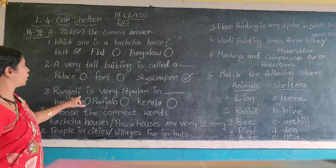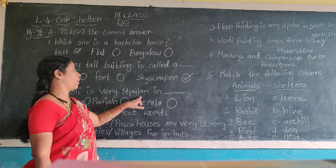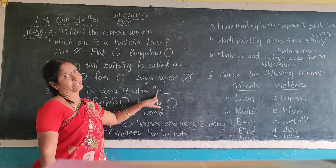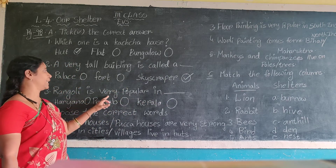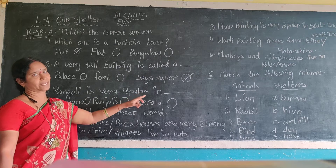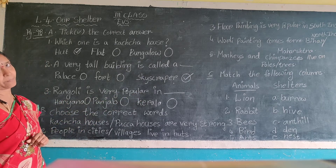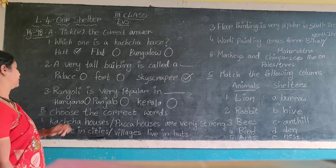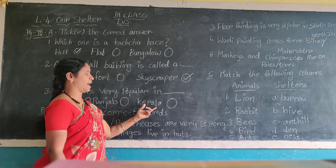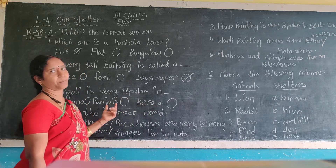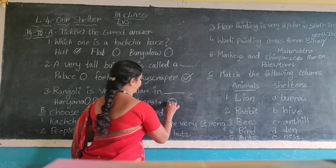Third one: Rangoli is very popular in dash. The options are Punjab and Kerala. The correct answer is Kerala.